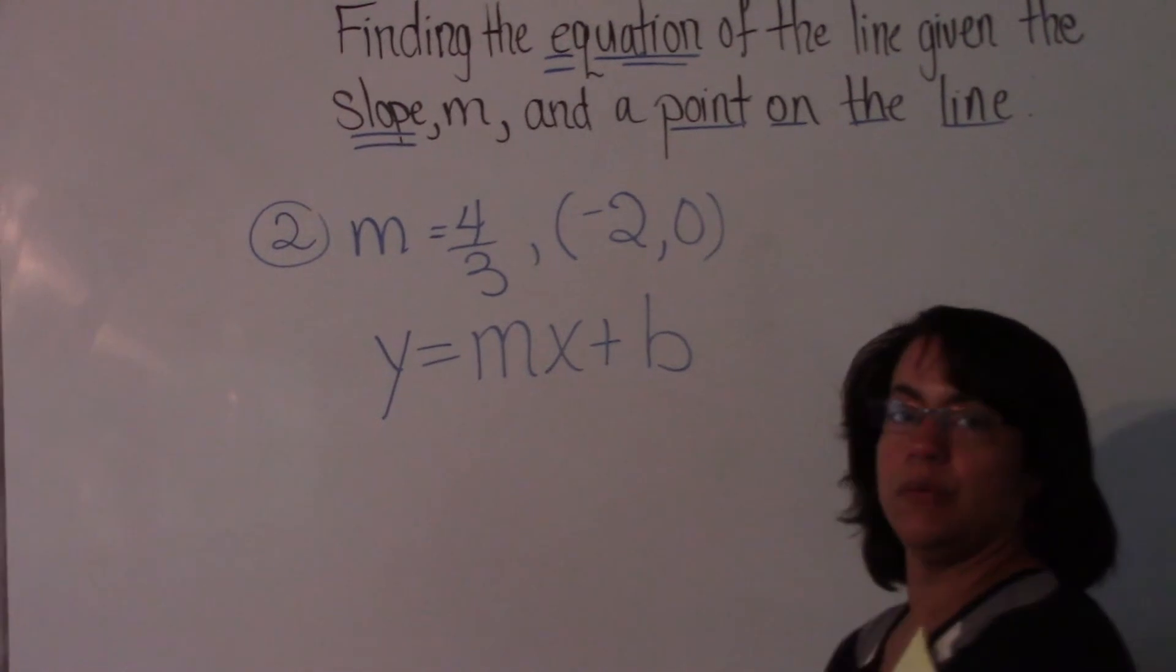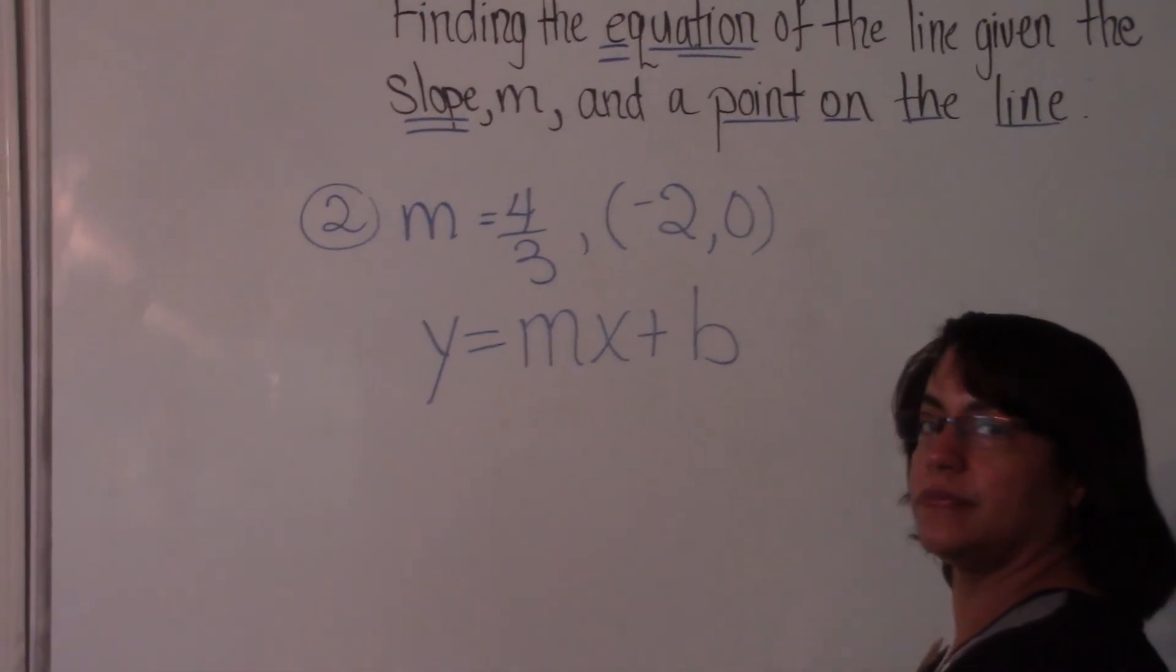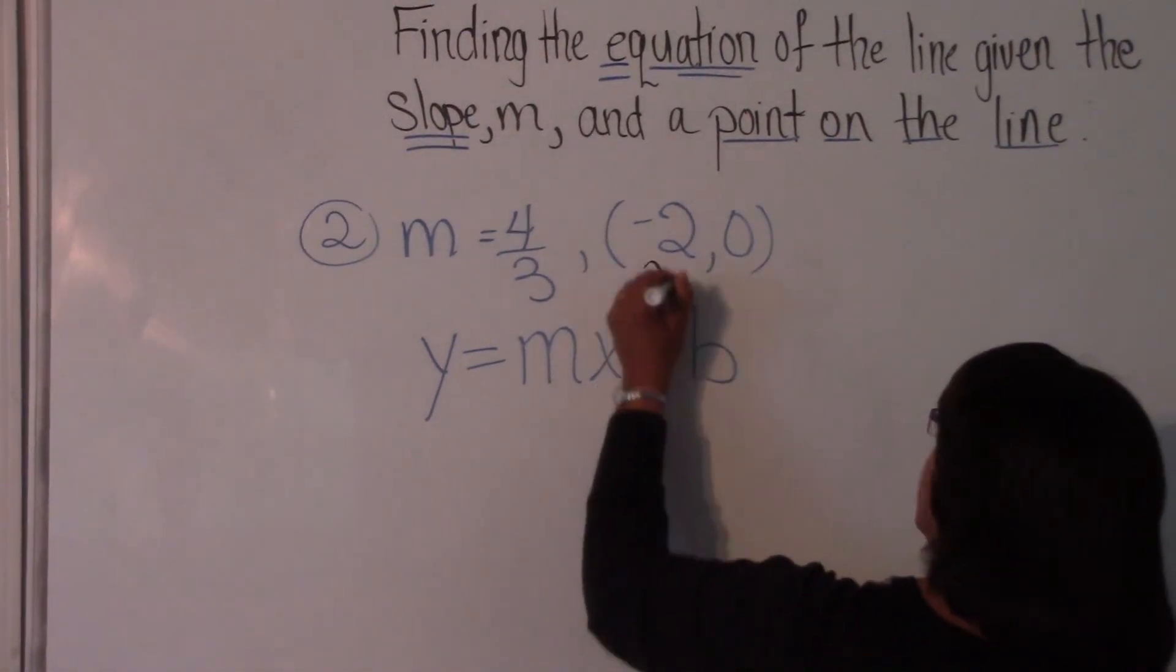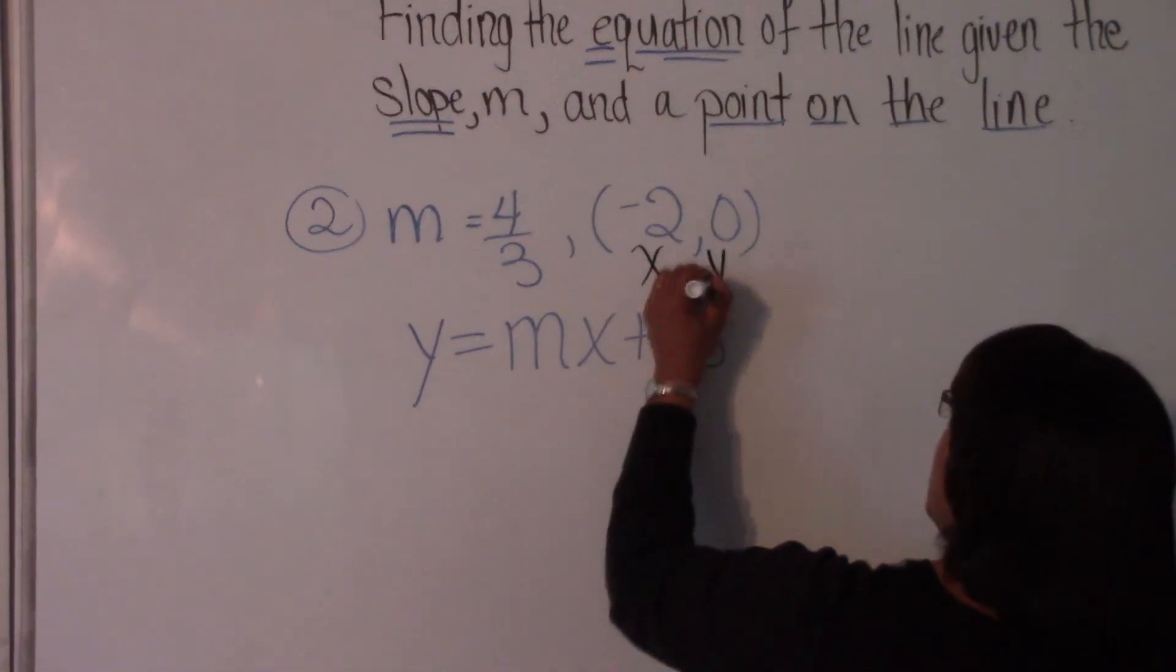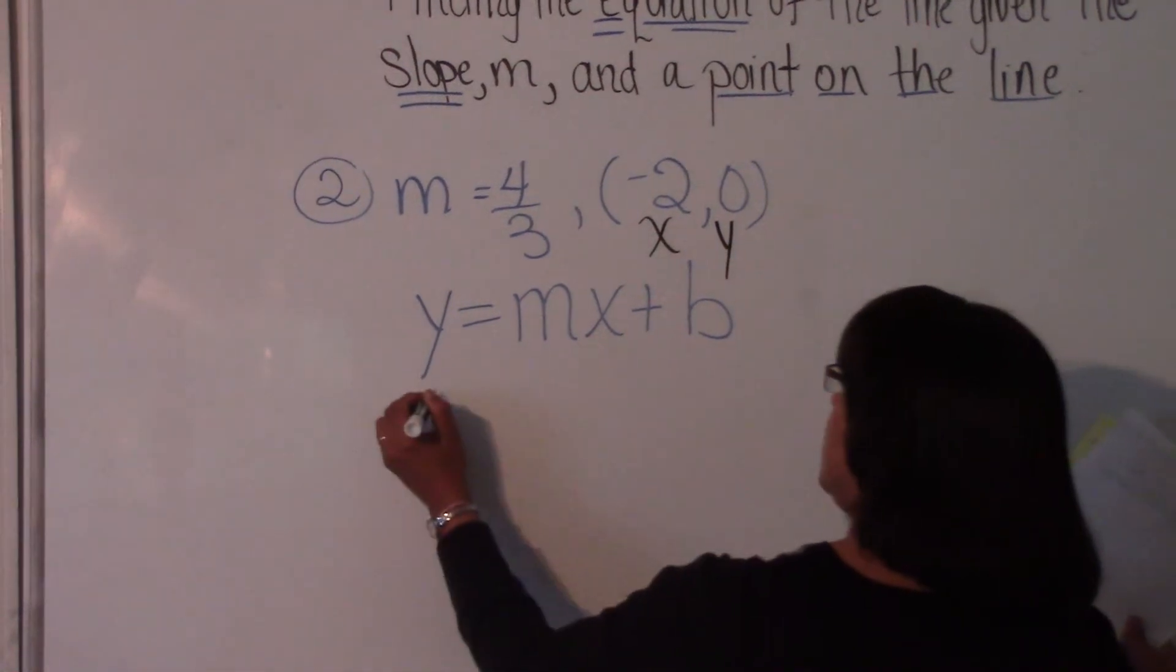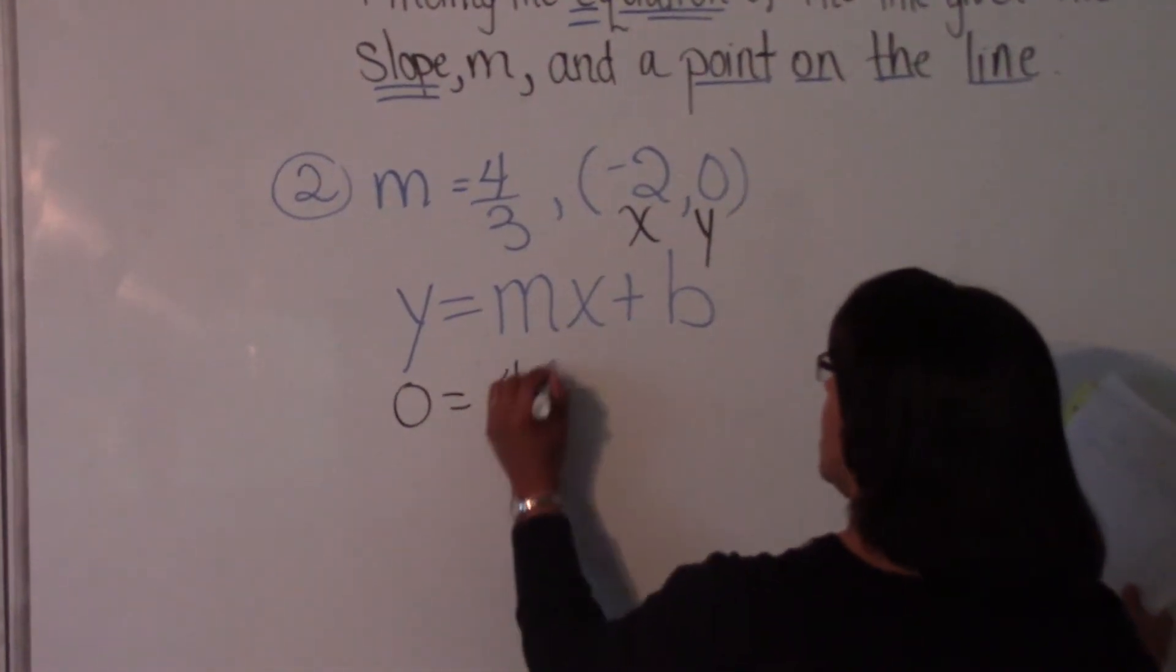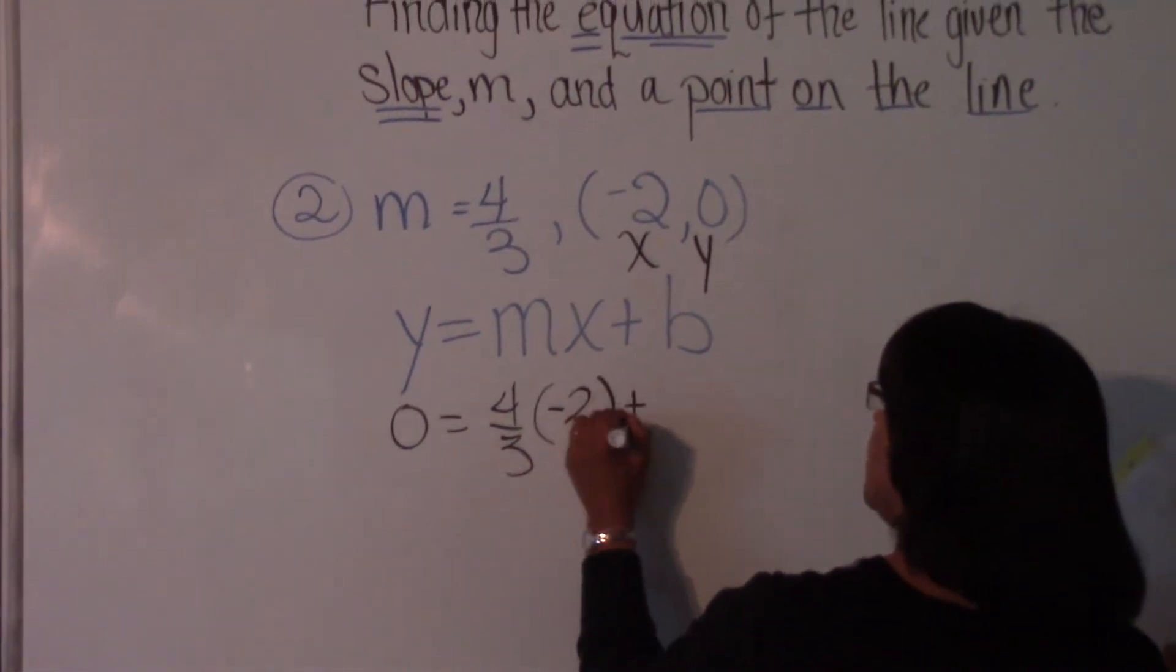See if you can remember what x and y are. Where do they come from? Yep, they come from the ordered pair. So x is negative 2, and y is 0. So 0 is equal to m, which is 4 thirds, times x, which is negative 2, plus b.